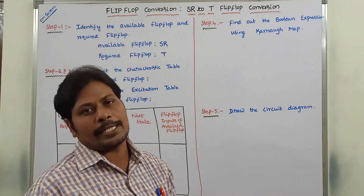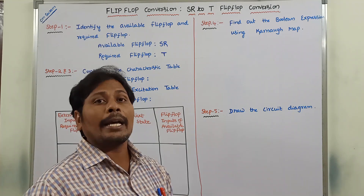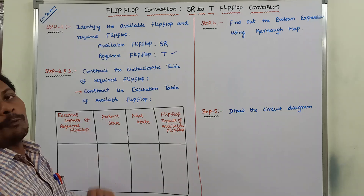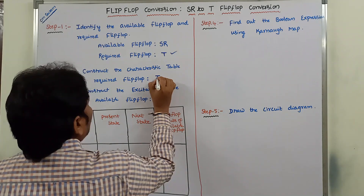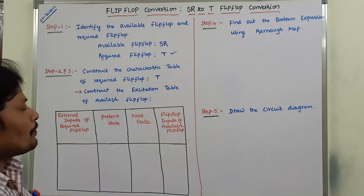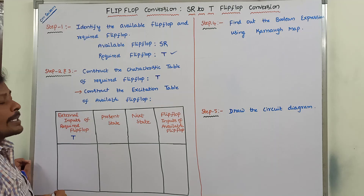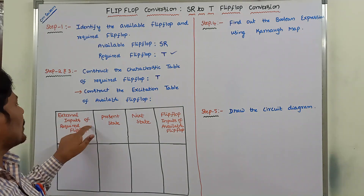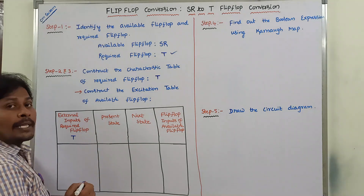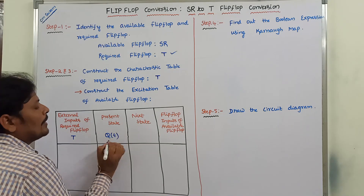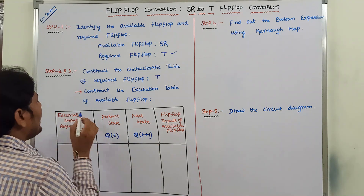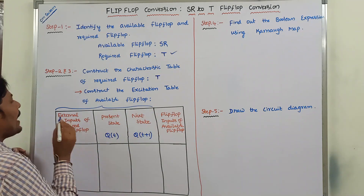Then we go to the second step. In the second step, construct the characteristic table for the required flip-flop. Here the required flip-flop is T flip-flop. For constructing the characteristic table for the required flip-flop T, the T input can be considered as the external input. The external input of the required flip-flop is only T. The present state or previous output can be denoted by Q(t) and next state or present output can be denoted by Q(t+1).